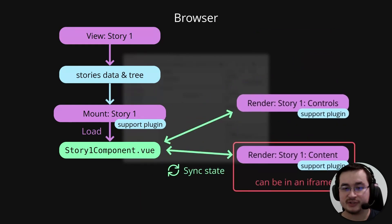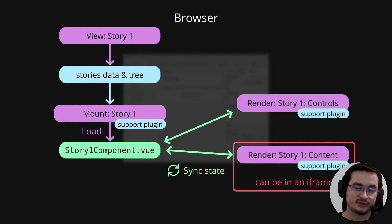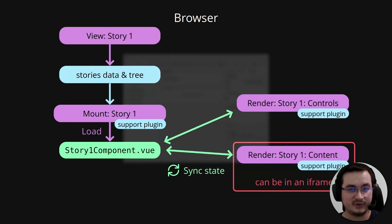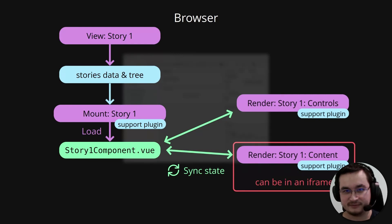Another important feature is state synchronization between the renderers. When you write a story using Histoire, you don't have to care about sending state between the controls and the main content and your setup code, because Histoire does the heavy lifting for you — even if the content is rendered inside an iframe, which is the case when you want to test a responsive design.